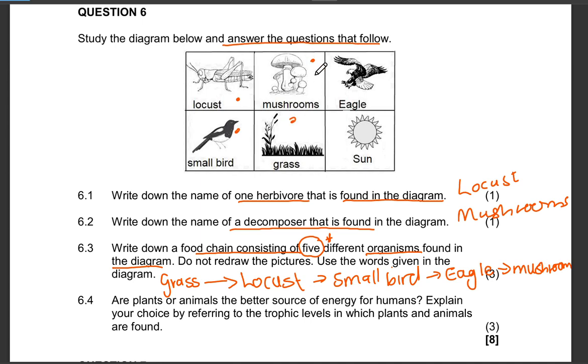Let's see, grass, small bird, mushroom, eagle. That's our food chain.